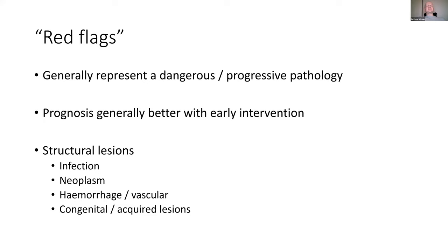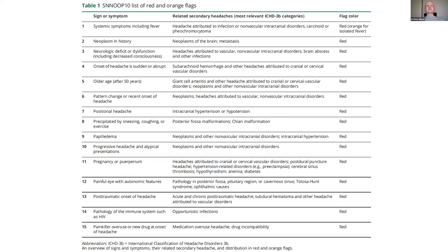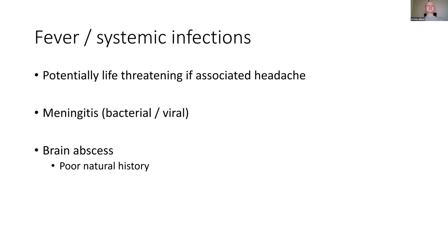Infection is a big red flag because it can be fairly rapidly progressive. Neoplasms — sooner rather than later, maybe weeks to months. Hemorrhage and vascular lesions can be quite rapid. Brain abscess is notoriously inconsistent in how it presents. The classical clinical triad of headache, fever, and neurological deficit is actually pretty uncommon. There's a broad range of symptoms including altered level of consciousness between 10 and 100% depending on the study. If patients have two or more of these features, you must have a low threshold to investigate.